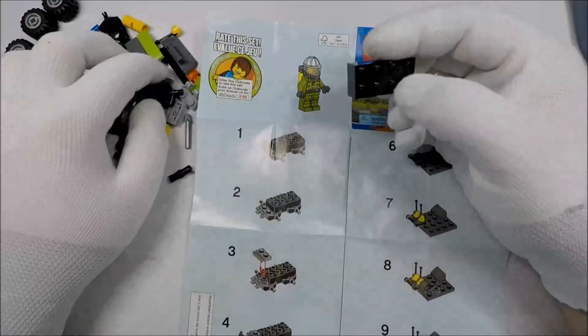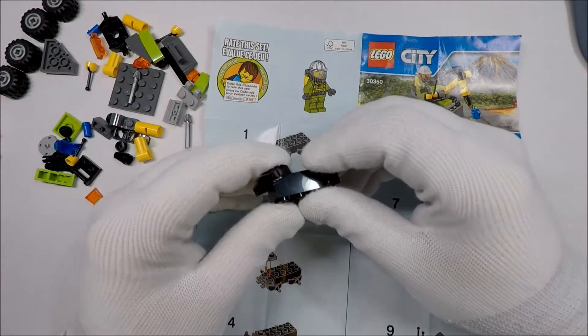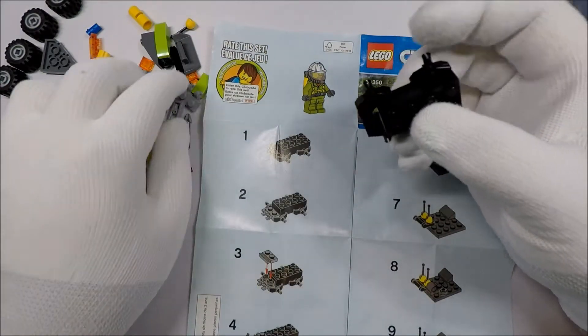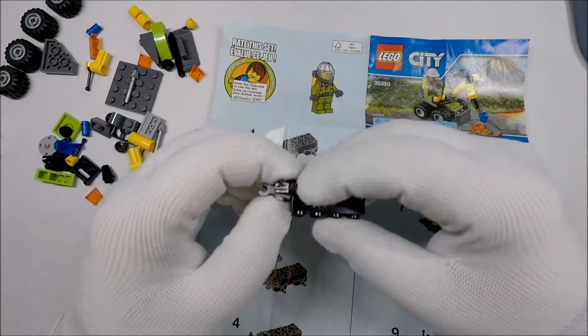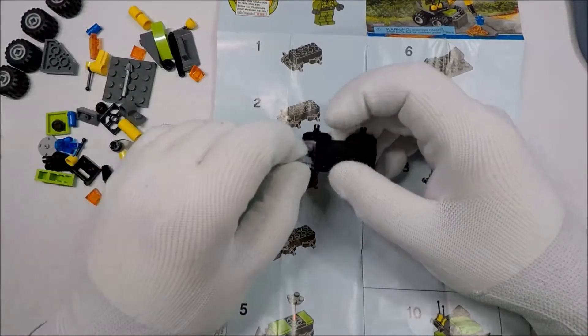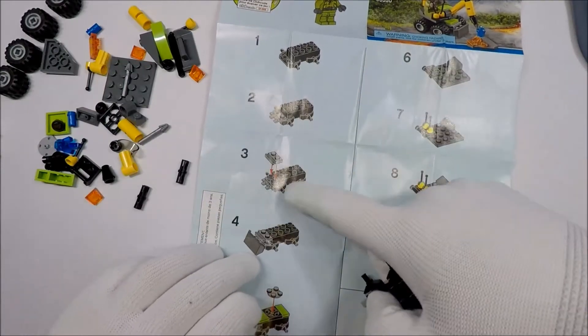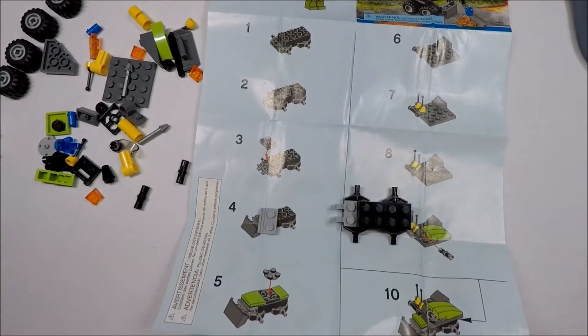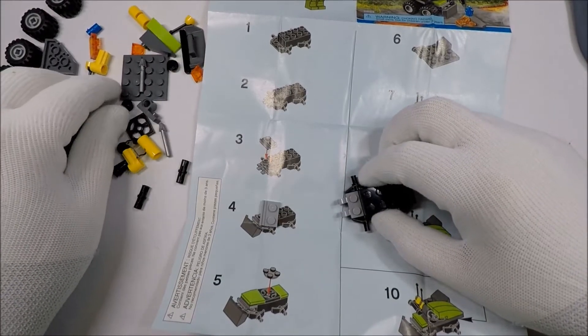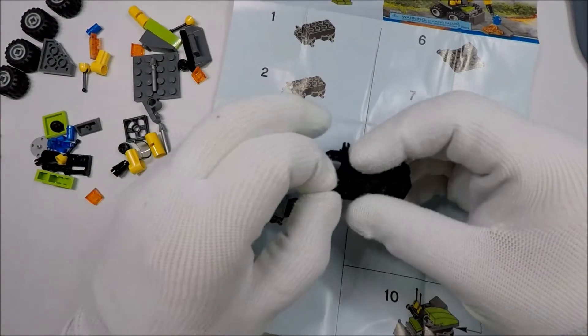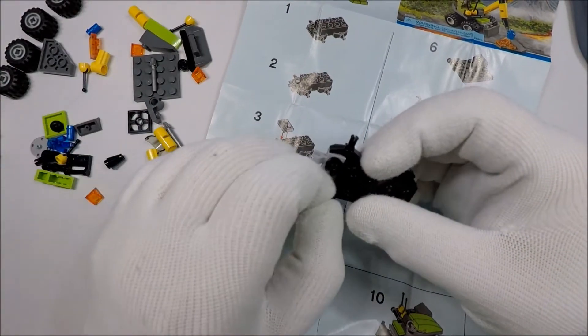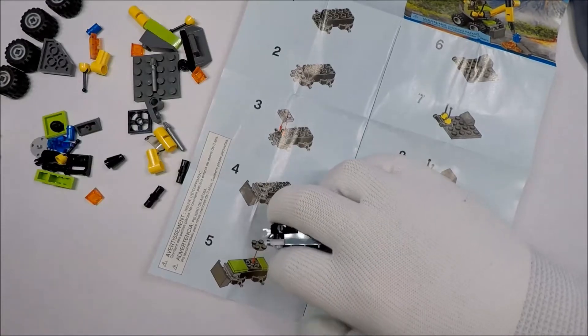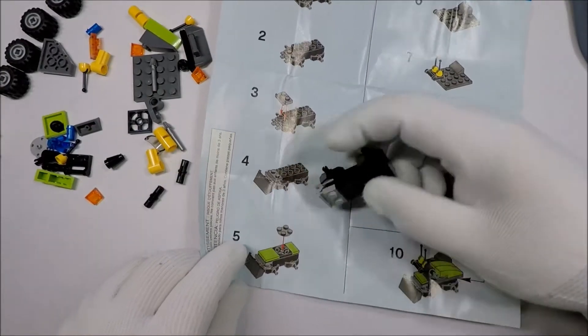Now we just put together the contraption, the Volcano Jackhammer. So far our Volcano Jackhammer, we got a couple of these, and then like so. What we've got to do is we have these two things go on top, like so, and then this goes on top. So it looks like that.